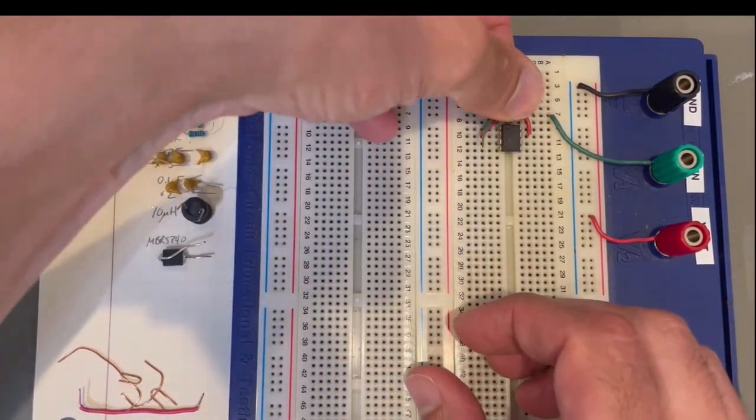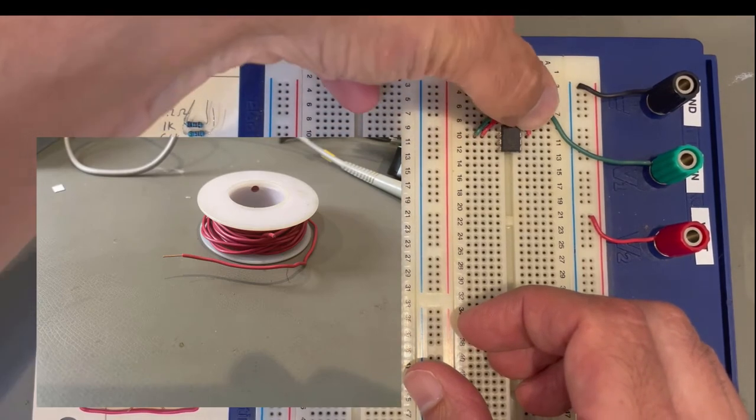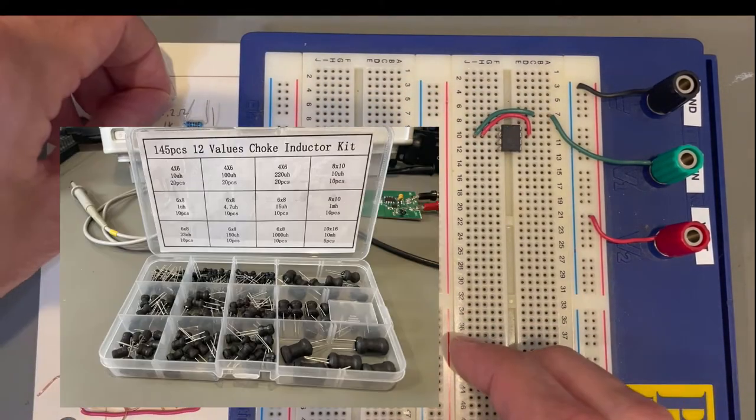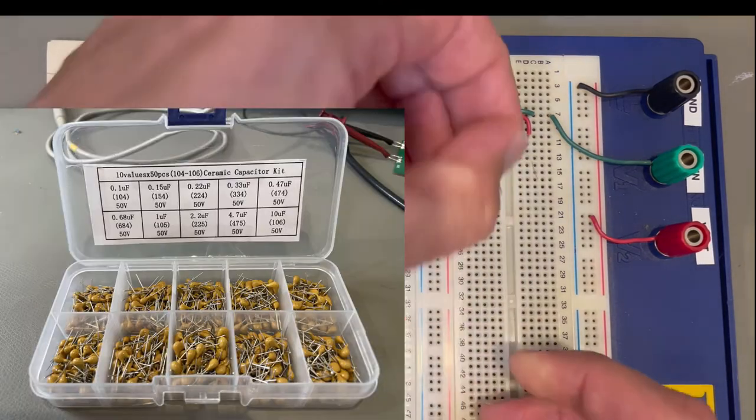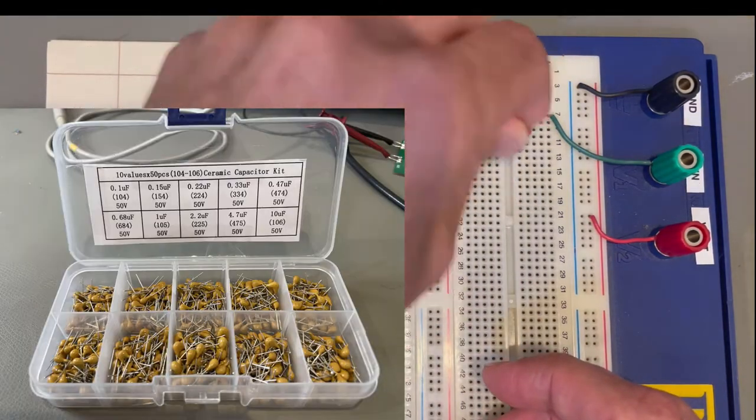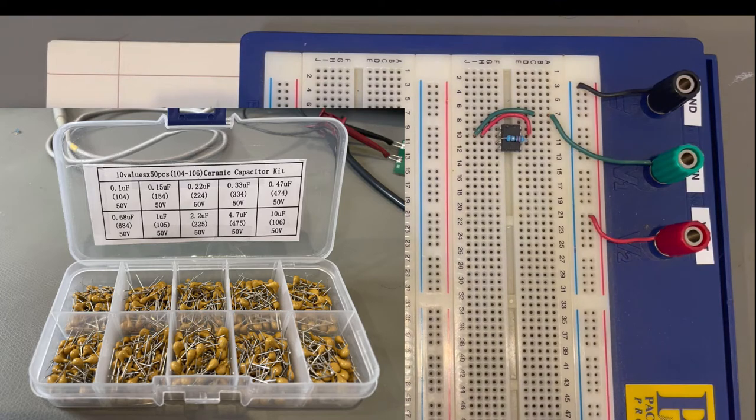You'll need a breadboard, some solid core wire, something like 22 gauge seems to work well, a 10 microhenry inductor, some ceramic capacitors, specifically 0.1 microfarad and 10 microfarad devices.